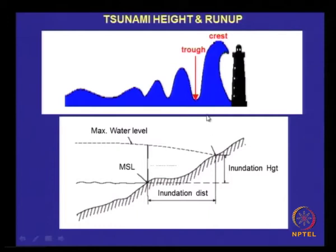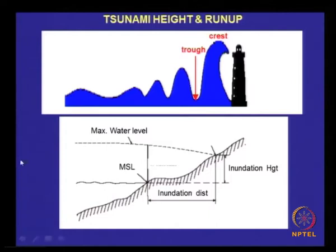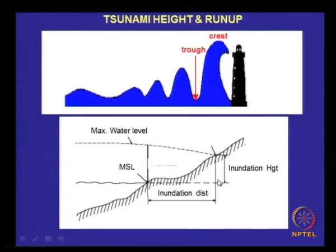This shows the MSL elevation, that is mean sea level. When the maximum water level comes, usually the maximum high water line may be somewhere here — it is only an approximate representation. But during a tsunami the maximum water level may be much higher, which means it will reach the land at some point here. Where it reaches, this is going to be the inundation height measured from the mean sea level, and the inundation distance is measured from this point to this point. This defines the inundation height and the inundation distance.